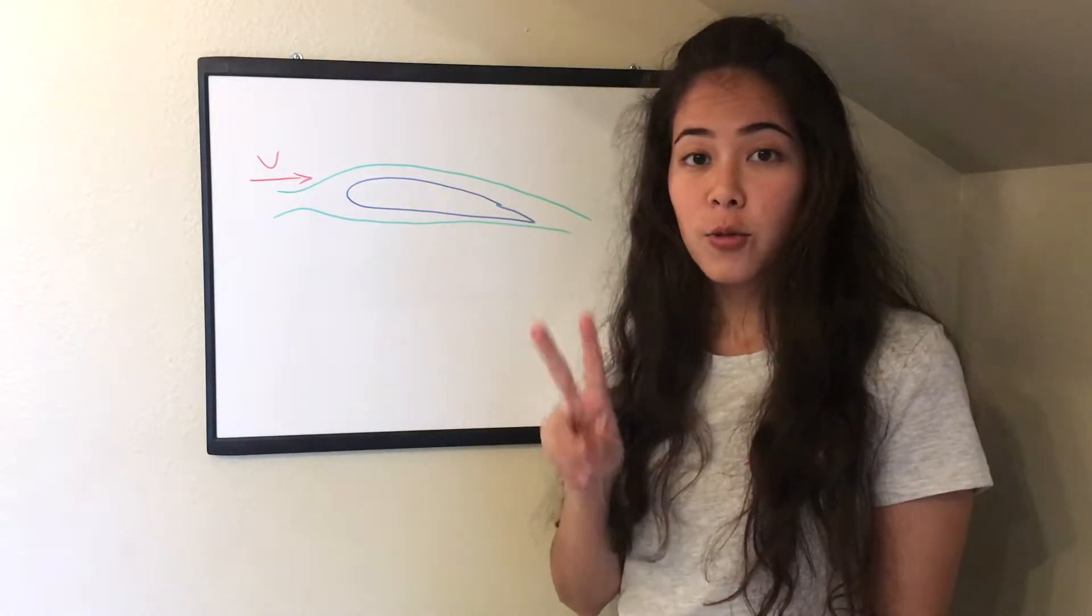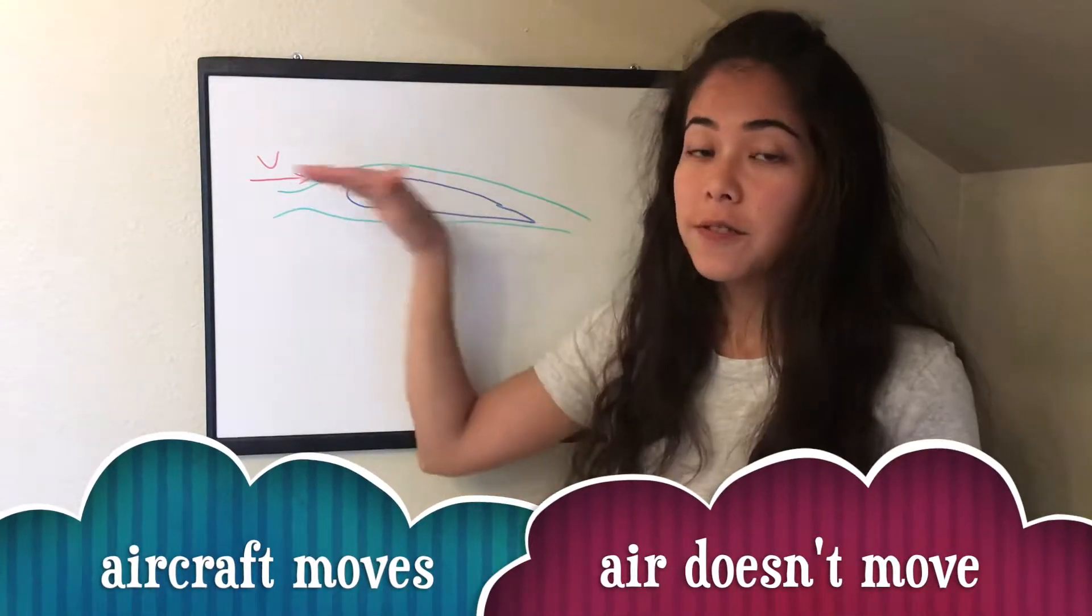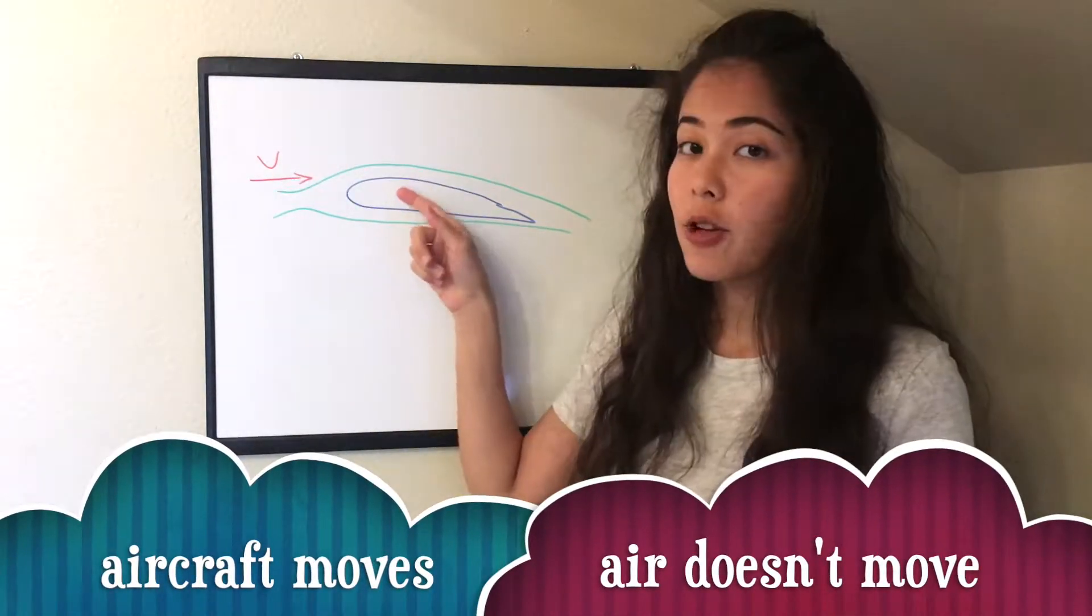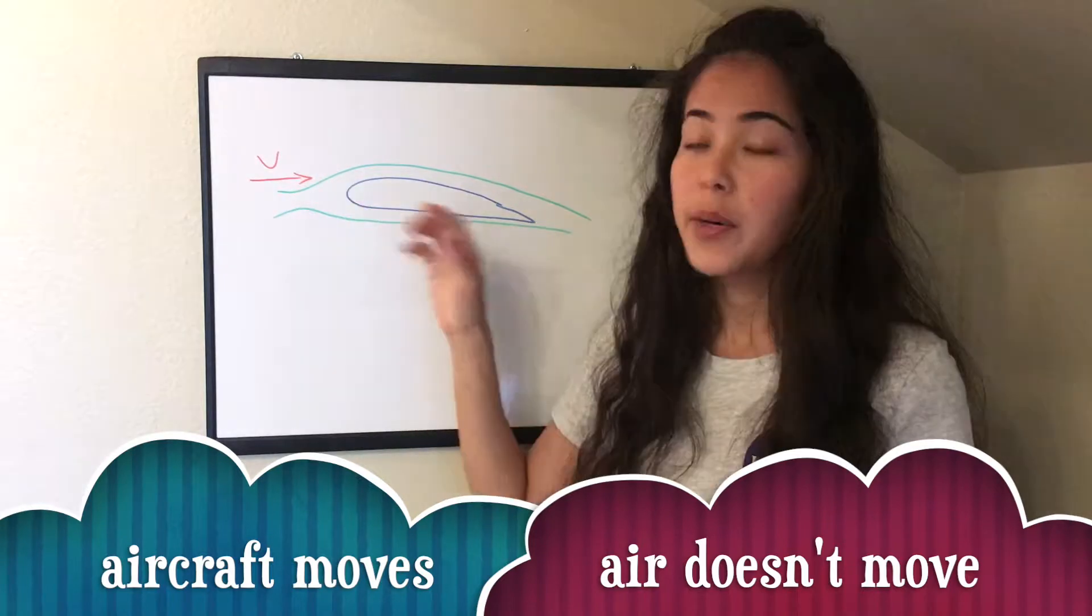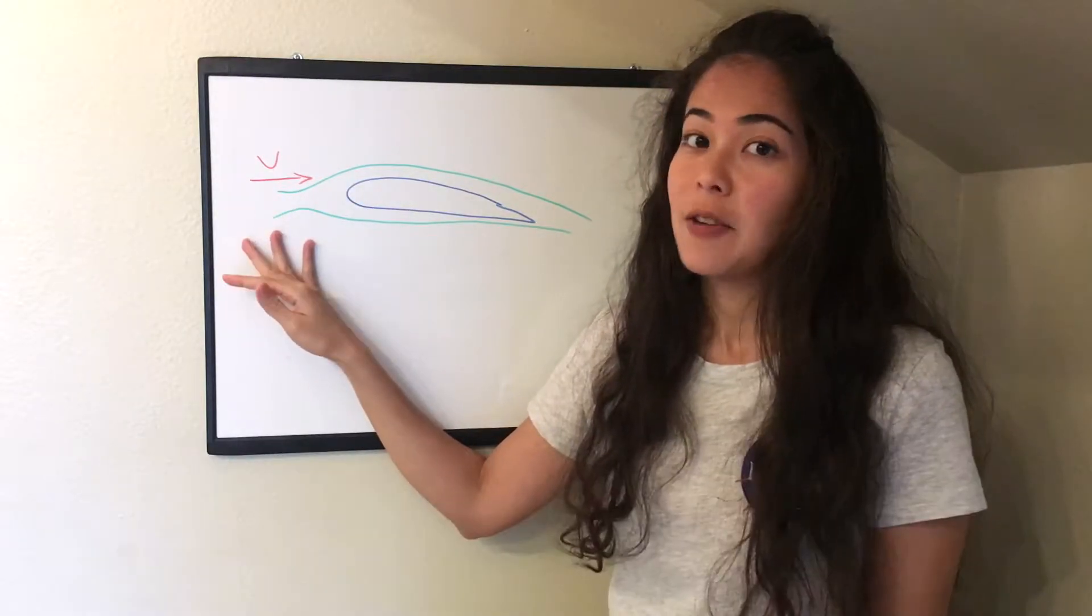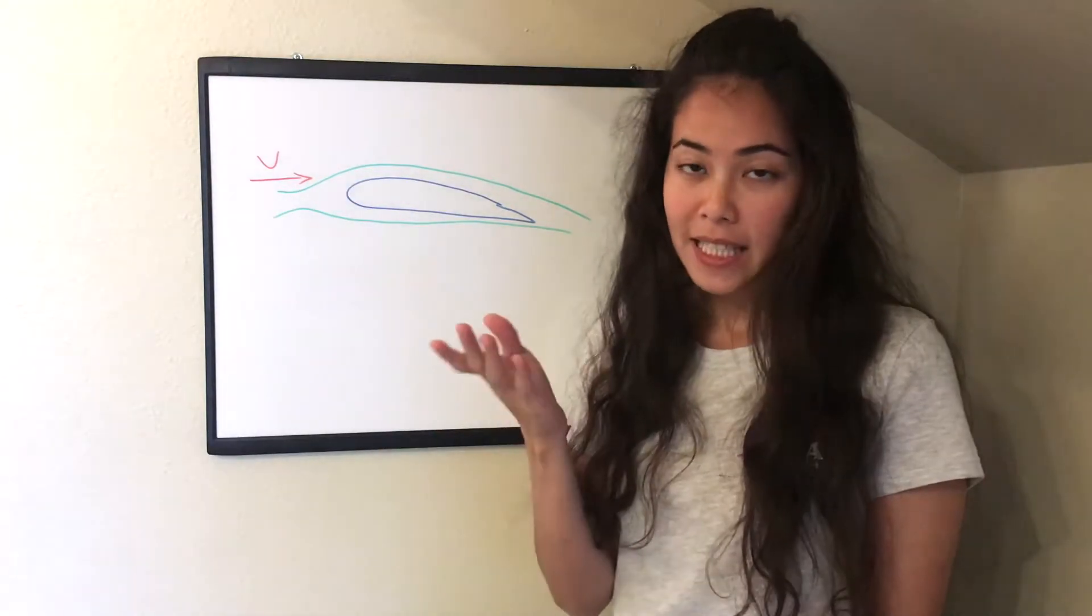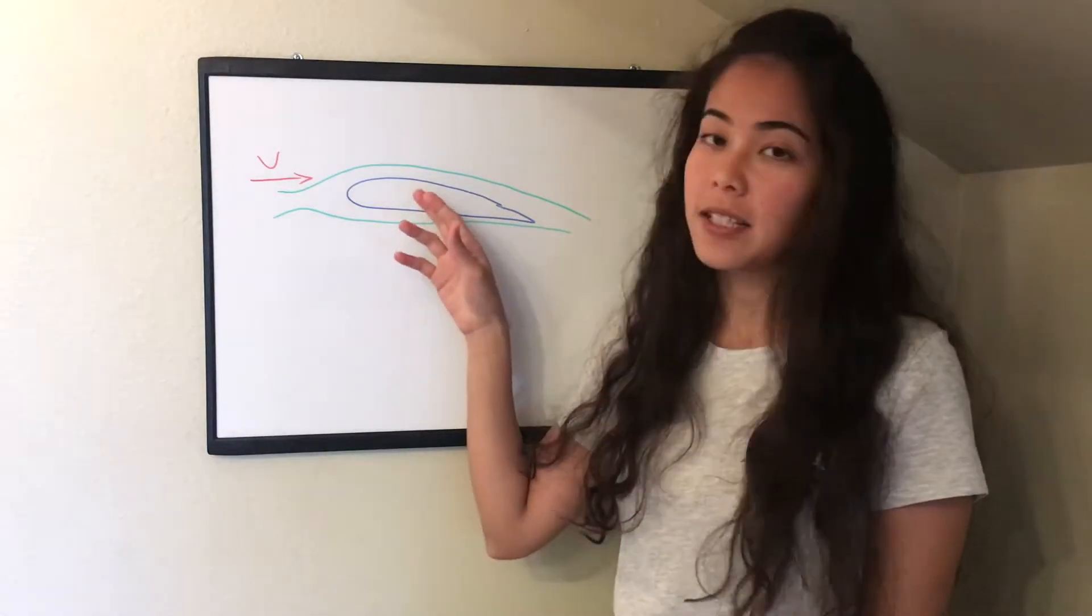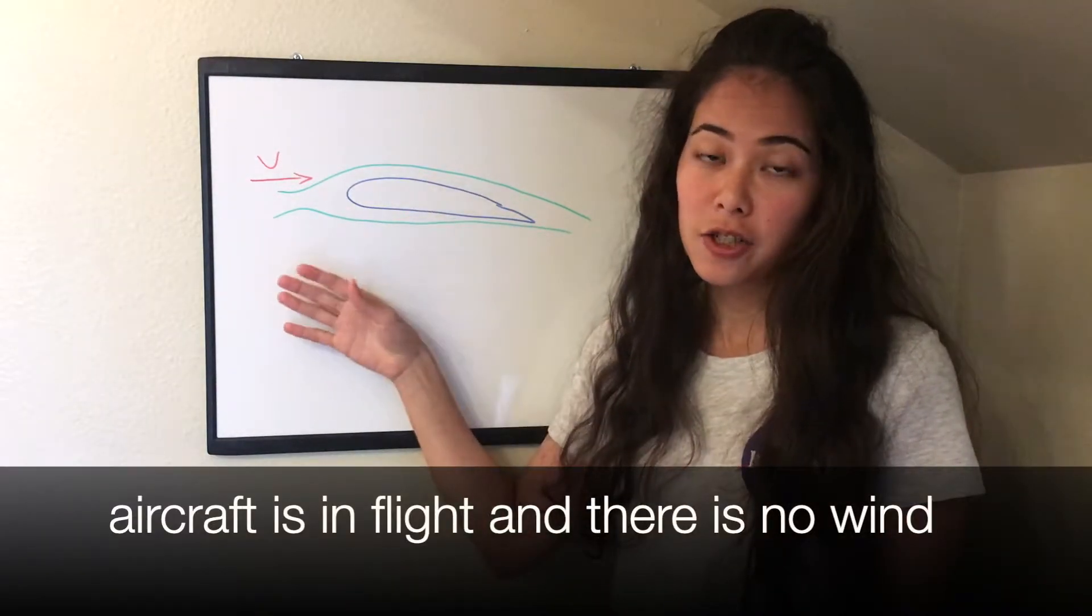And the second situation is when the airfoil is flying. So the airfoil has a speed in that direction but the air is stationary. And when does that happen? You probably guessed that it happens when the aircraft is flying but there's no wind.